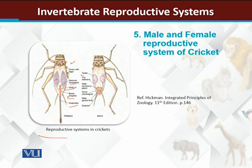Looking at the male cricket, there is the seminal receptacle, sperm from vas deferens passes through, and after this accessory glands are found.